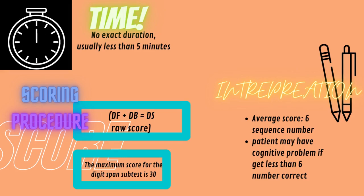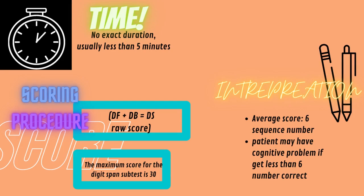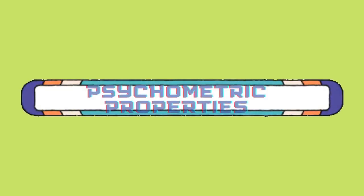The Digit Span test is scored by the number of sequences the participant was able to remember correctly. The examiner adds the total number of correct sequences — backwards and forwards — to get the Digit Span raw score. The maximum score for the Digit Span subtest is 30: 16 for Digit Forward and 14 for Digit Backward. The average score for both Digit Forward and Digit Backward is 6.